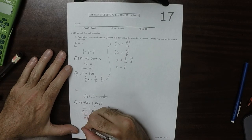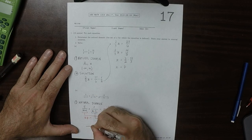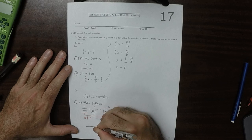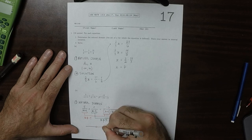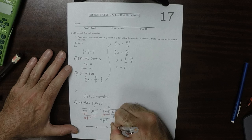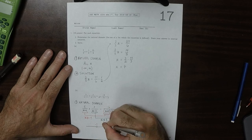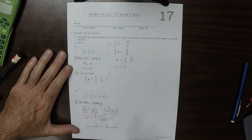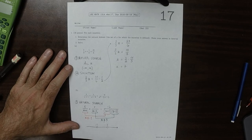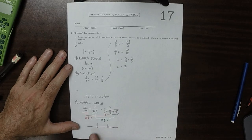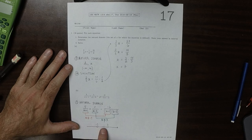So the natural domain, if you were to plot it, looks like this. It looks like a line, a number line, where you have every single point except negative 1 and 3. But you have every other point. And then written in interval notation, as requested, it will be the union of this interval, that interval, and that interval.